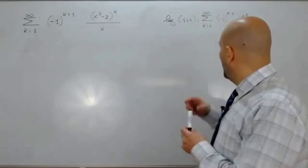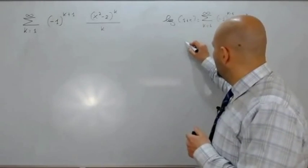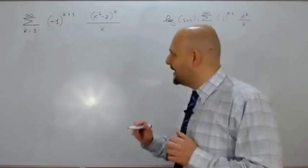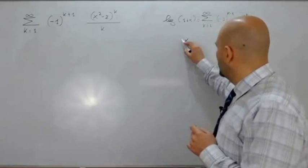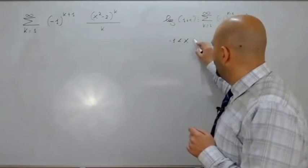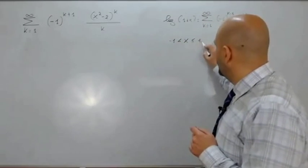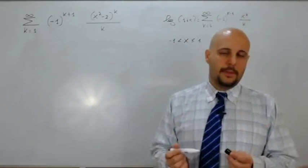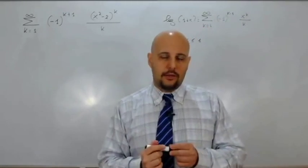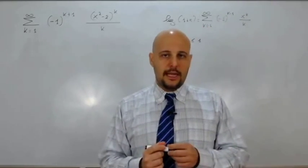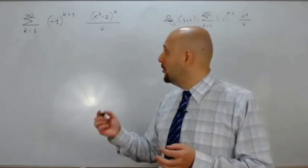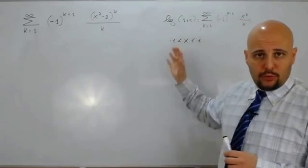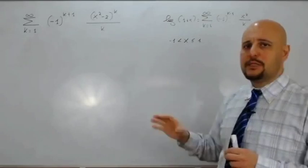L'insieme di convergenza puntuale è x compreso fra meno 1 e 1, con 1 incluso e meno 1 escluso, perché va ad annullare l'argomento del logaritmo che deve essere strettamente maggiore di 0. Questo è tutto quello che dobbiamo sapere sulla serie del logaritmo.